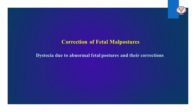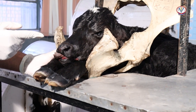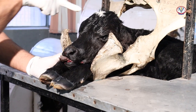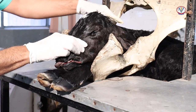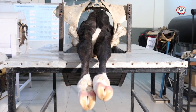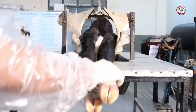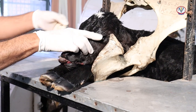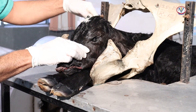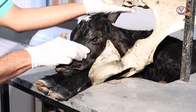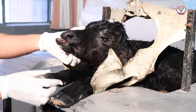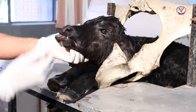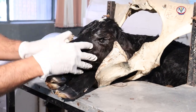In large animals, the fetus is mostly presented in longitudinal presentation — anterior longitudinal when the head and forelimbs are presented towards the birth canal, or posterior longitudinal when the hindquarters and hind limbs are presented. Normal presentation is anterior longitudinal; normal position is dorsosacral, where the dorsum of the fetus faces towards the sacrum of the dam. Normal posture is both forelimbs extended in the birth canal with the head resting on the knee joints. Any deviation in presentation, position, and posture leads to dystocia.